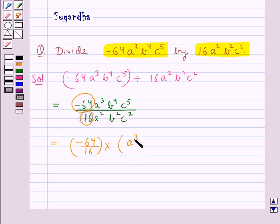And this is multiplied by the result that we obtain by dividing the literal coefficients. That is, (a³b⁴c⁵)/(a²b²c²). Now we know 16 times 4 is 64. So we get, this is equal to -4 times